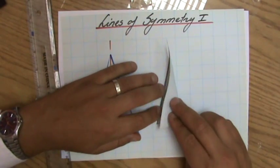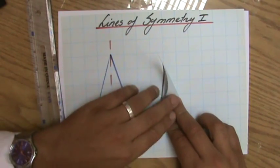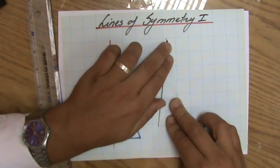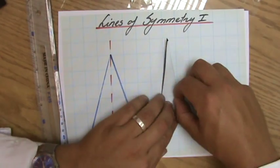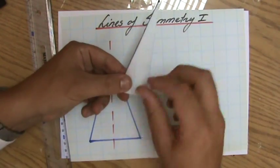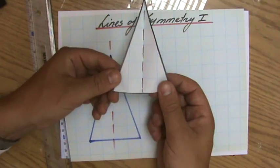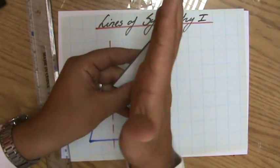So if I fold it over that line, I'll try to do it as accurately as I can. Indeed, as you can see, the right side is exactly on the left side. So that is a line of symmetry, or a mirror line.